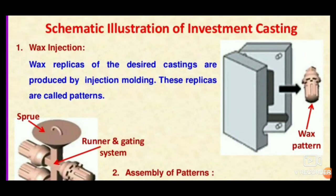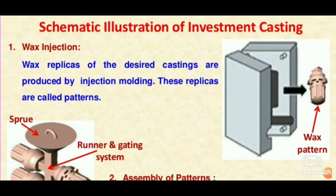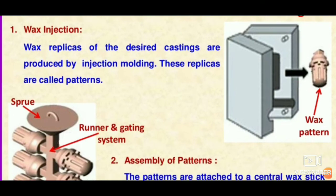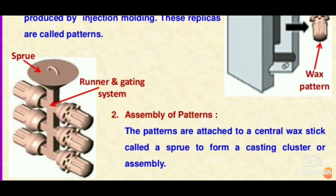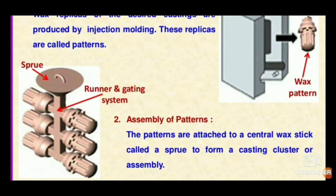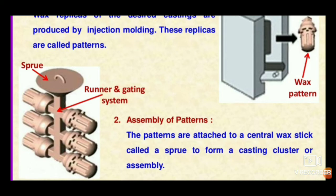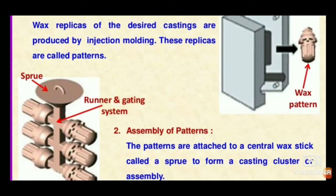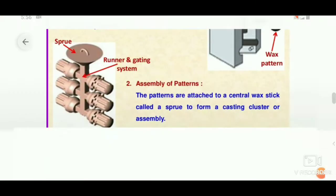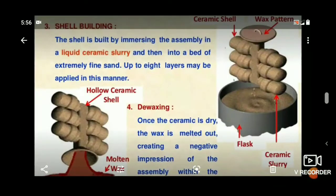First, a metallic mold is prepared and wax is injected into it so that the wax takes the shape of the mold cavity, producing a single wax pattern. By making several wax patterns, they are assembled like a tree with a runner and gating system. At the top, a sprue is made using wax.